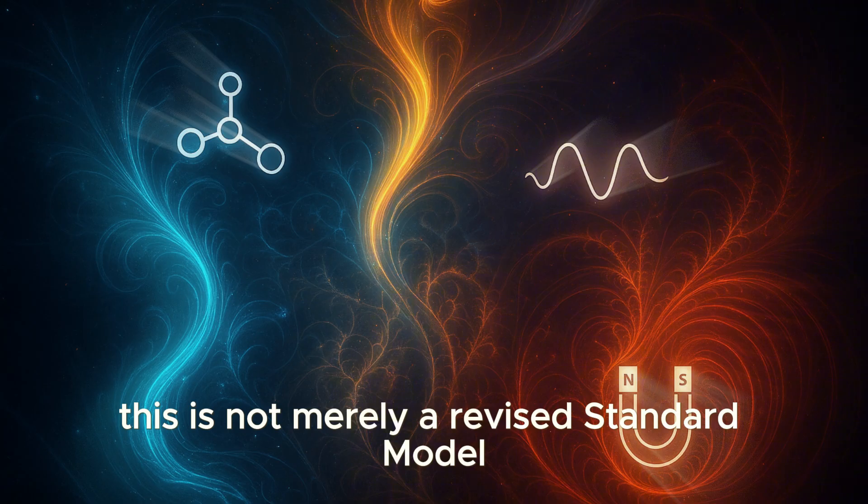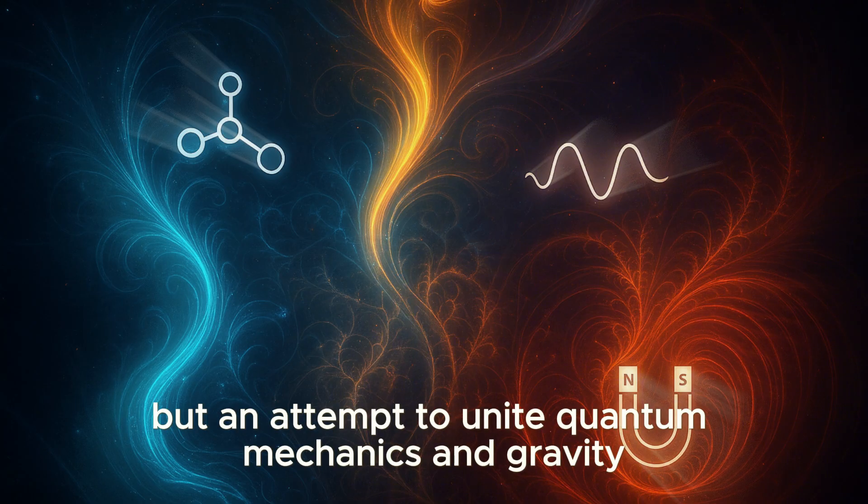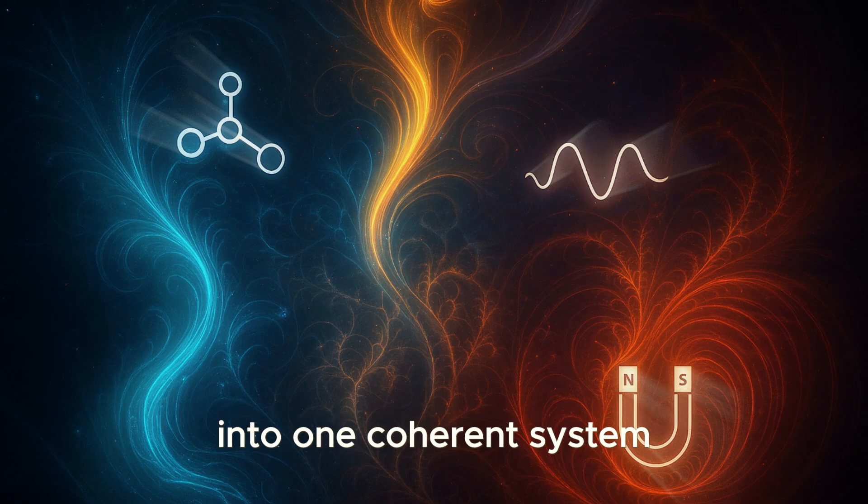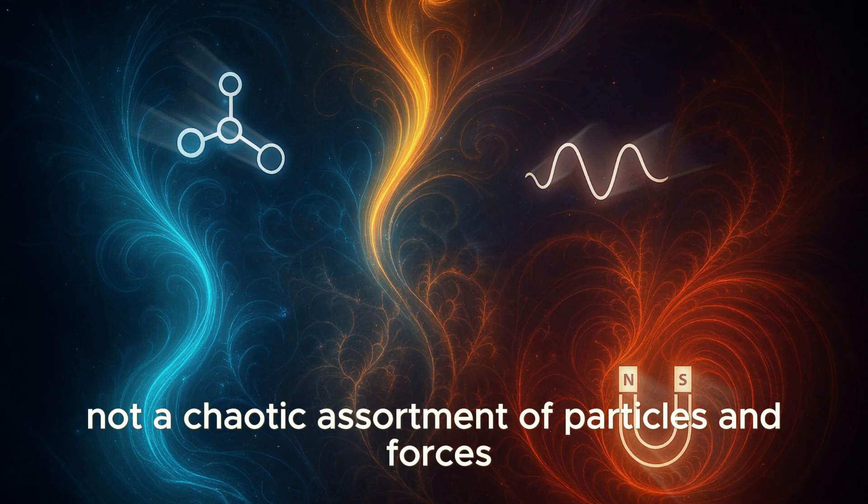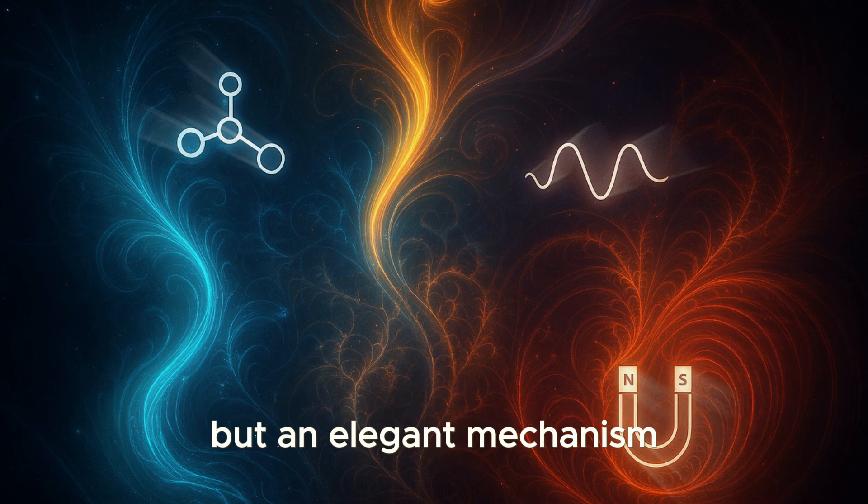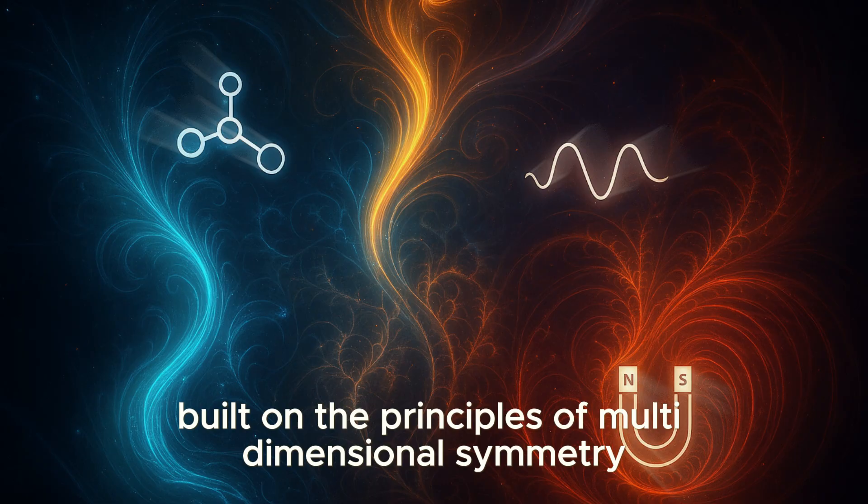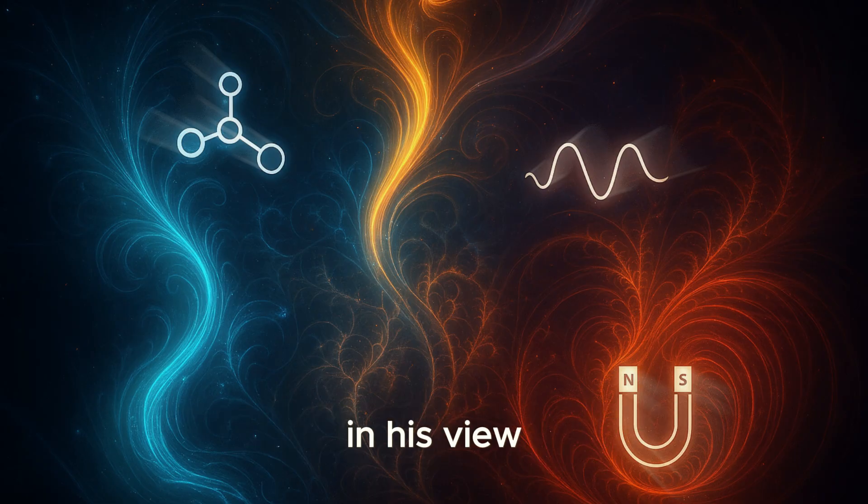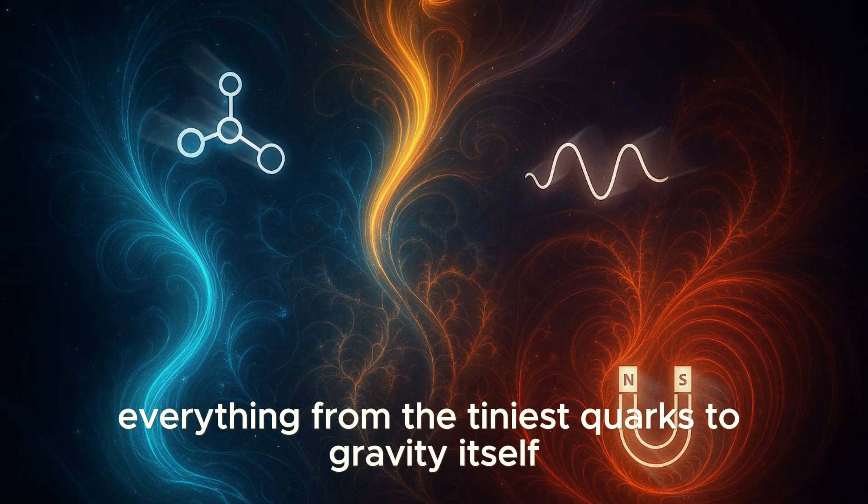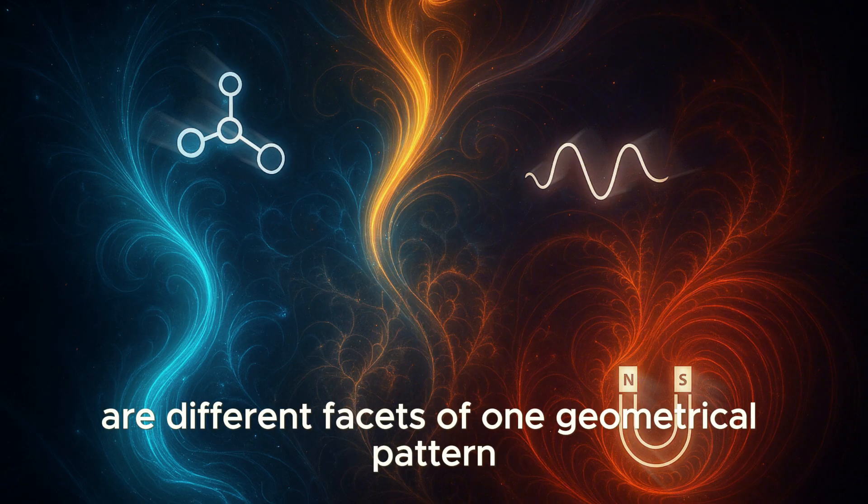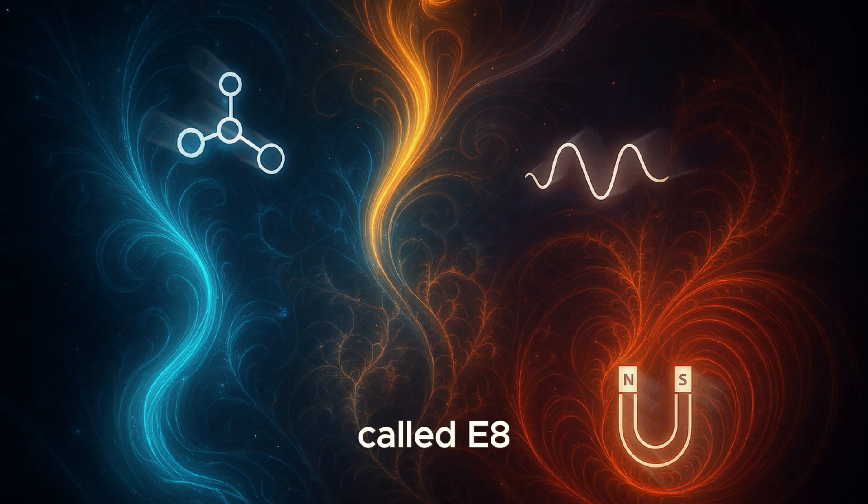This is not merely a revised standard model, but an attempt to unite quantum mechanics and gravity into one coherent system. Not a chaotic assortment of particles and forces, but an elegant mechanism built on the principles of multidimensional symmetry. In his view, everything from the tiniest quarks to gravity itself are different facets of one geometric pattern called E8.